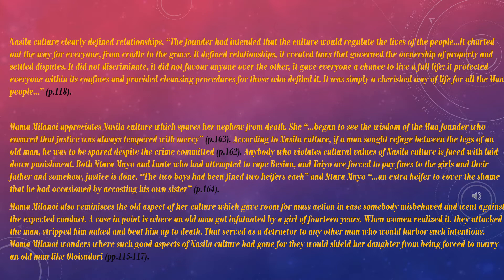Mama Milanoi also reminisces about an old aspect of her culture which gave room for Ma's action in case somebody misbehaved and went against expected conduct. A case in point is where an old man got infatuated with a girl of 14 years. When women realized it, they attacked the man, stripped him naked, and beat him to death. That served as a deterrent to any other man who would have such intentions. Mama Milanoi wonders where such good aspects of Nasila culture had gone, for they would shield her daughters from being forced to marry an old man like Olosudori. Pages 115 to 117.